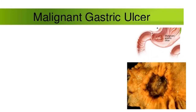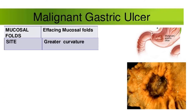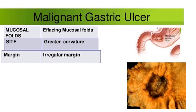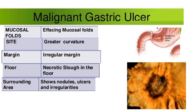In malignant gastric ulcer, there is displacement of the mucosal folds — the mucosal folds become flattened. Malignant gastric ulcer usually occurs along the greater curvature of the stomach. The margins are irregular with necrotic slough in the floor, the surrounding area shows nodules and irregularities, and the ulcer is usually large and deep.